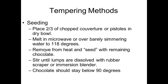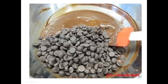Another tempering method is called seeding. You melt two-thirds of your chopped Couverture chocolate in a bowl — usually over a double boiler or in a microwave — and heat it just until it starts melting, constantly stirring and keeping it below 90 degrees. Once that first two-thirds of chocolate is melted, you add the remaining one-third and keep stirring until all the chocolate is melted. That technique is called seeding. For example, with a pound of chocolate, you melt two-thirds in the bowl, then add the remaining one-third to lower the temperature and melt it all together.